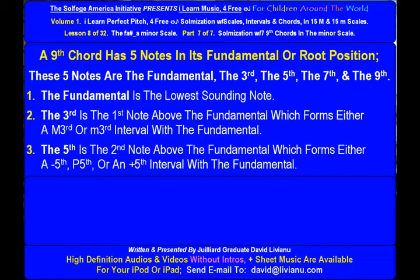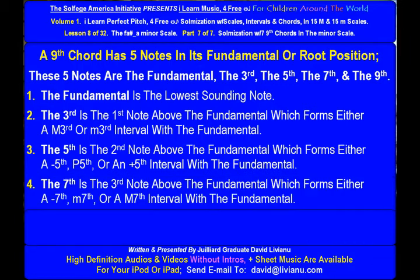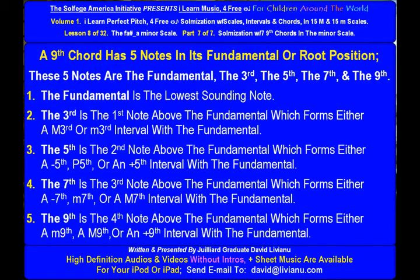The 5th is the second note above the fundamental which forms either a diminished fifth, perfect fifth, or an augmented fifth interval with the fundamental. The 7th is the third note above the fundamental which forms either a diminished seventh, minor seventh, or a major seventh interval with the fundamental.